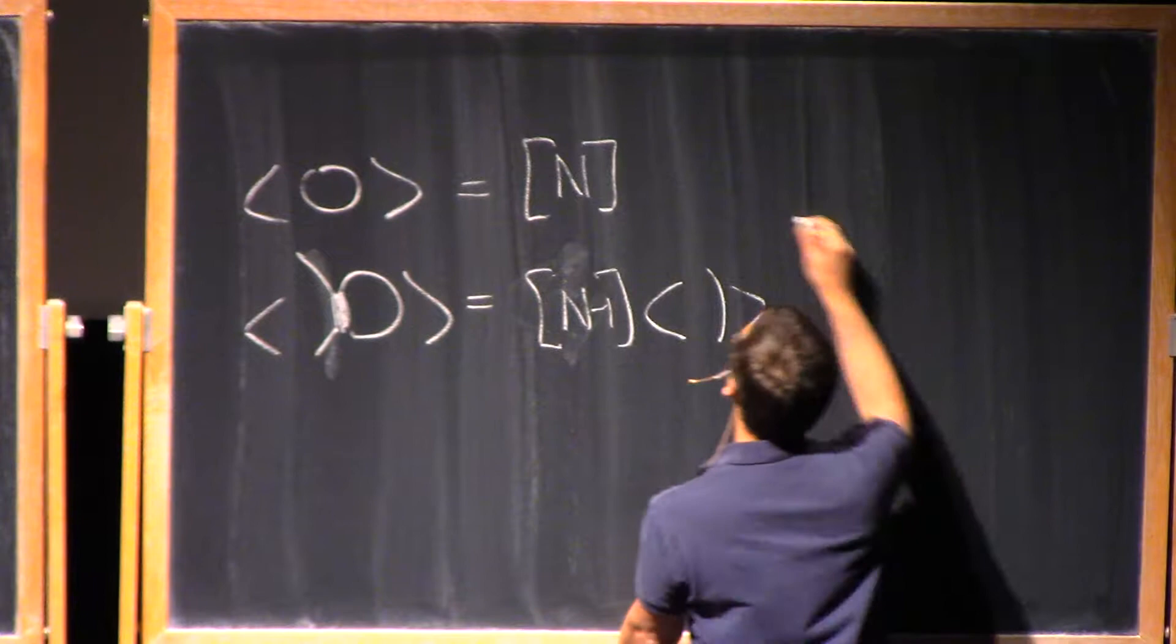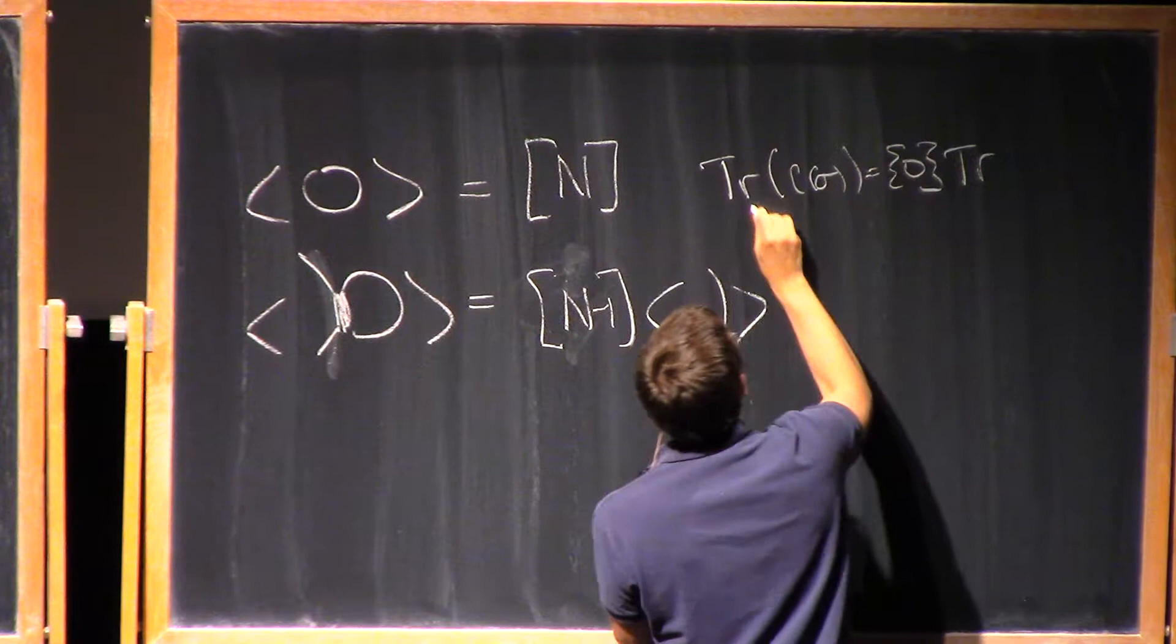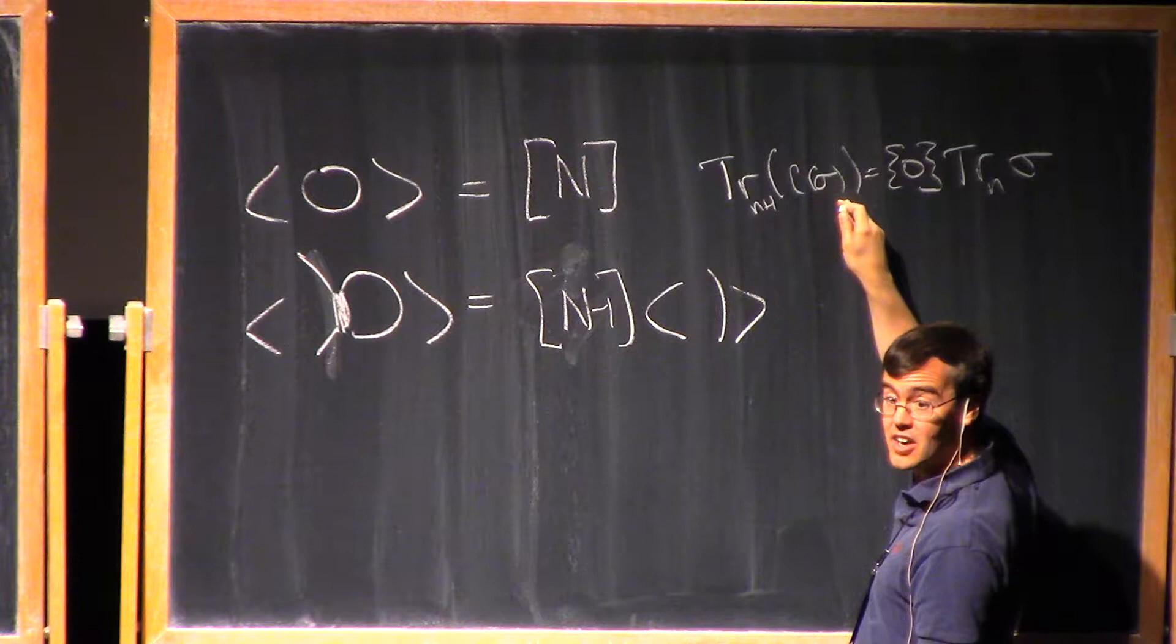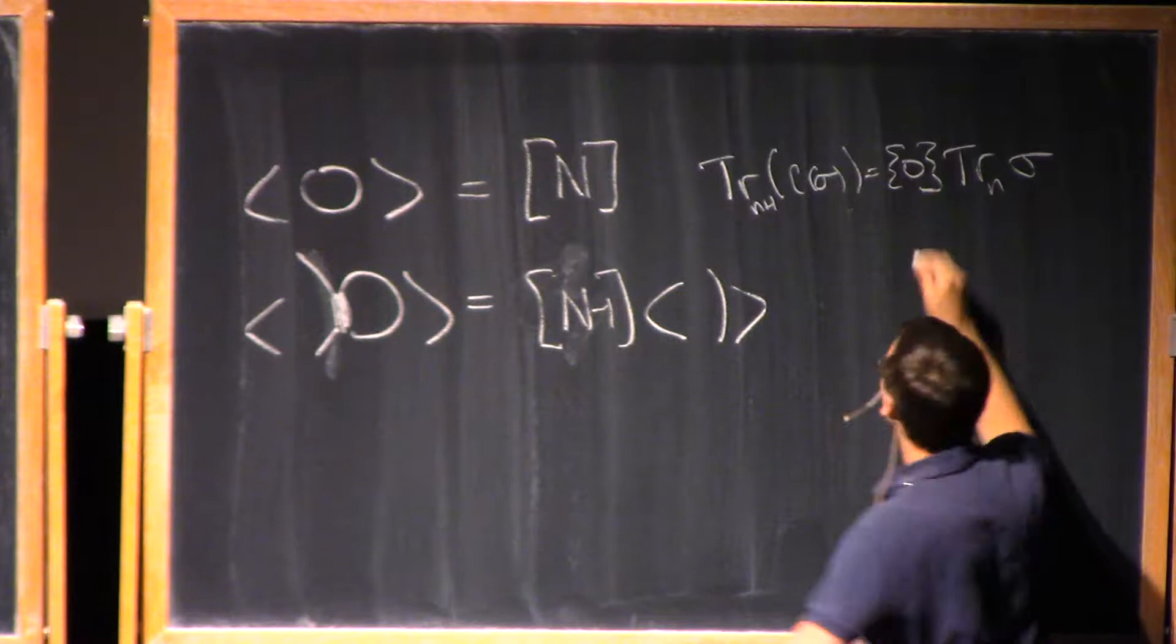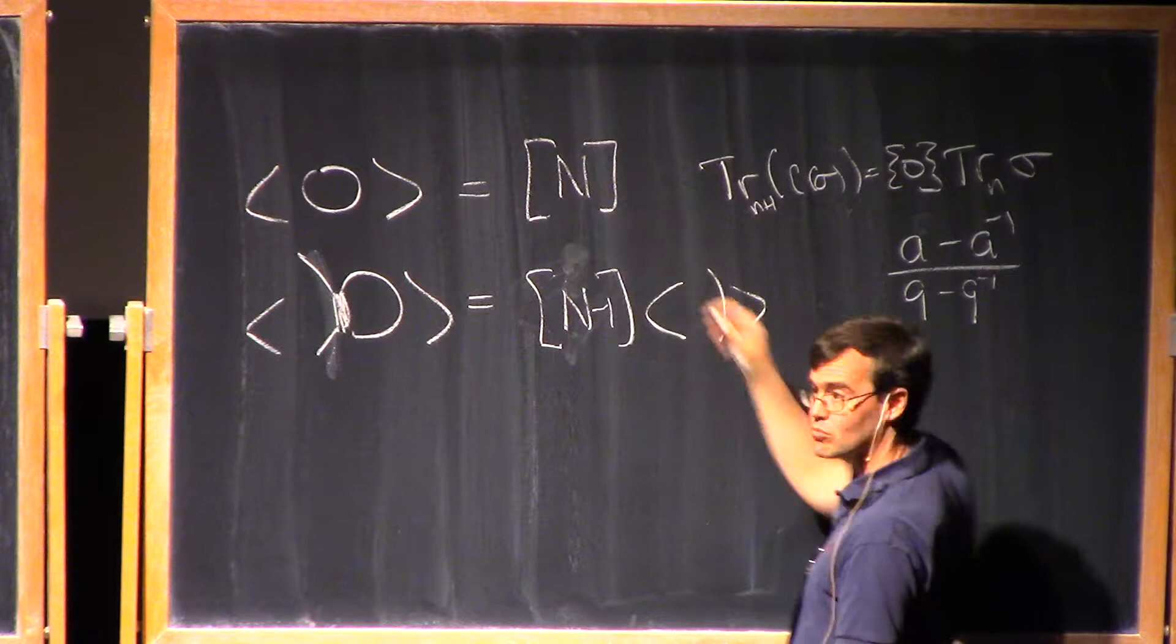If I have a weight two strand here, let me try and draw this a little bit more clearly. So if I have this, I can get rid of this little bubble over here at the cost of introducing a factor of quantum N minus one. So that's that times this. And now, actually, where do these relations come from? These relations are exactly the relations for the Acnianu trace that I wrote down in the last lecture.